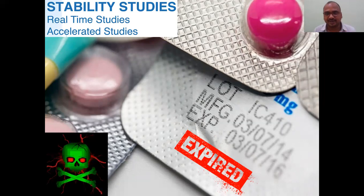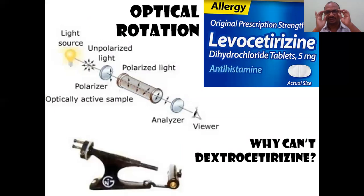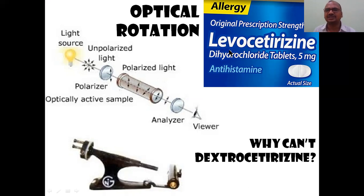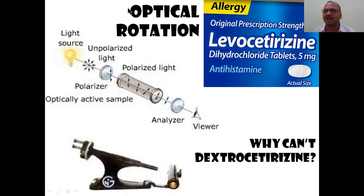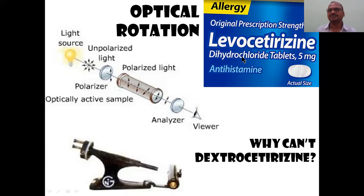Another key concept: why do we use cetirizine only in the levo form — levo-cetirizine? There is also a dextro form, but we don't use it. 'Levo' is not the name of cetirizine; it describes its character — it rotates polarized light. What is polarized light? What is optical rotation? What is a polarimeter? These are all answered by Physical Pharmacy.